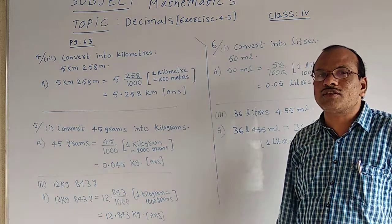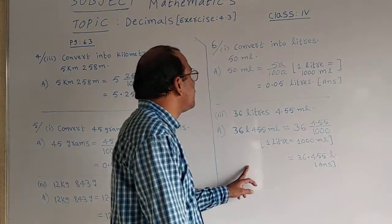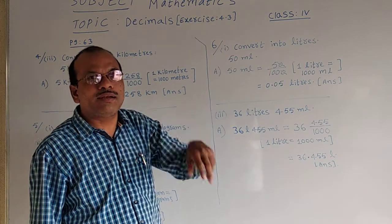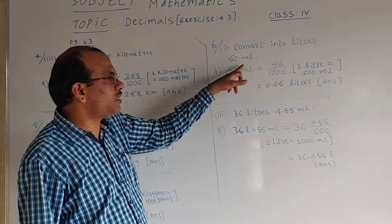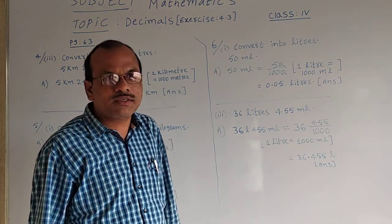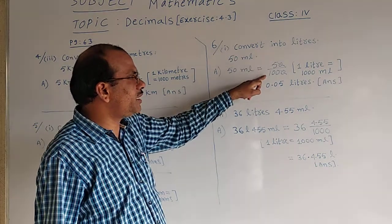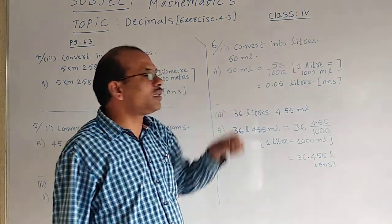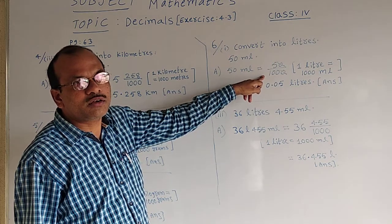Is it clear, students? One more question remains to complete this exercise and this chapter. That is the sixth question, first part: convert into liters. The given question is in milliliters — ML is nothing but milliliters — that should be converted into liters. We have seen milliliters and liters on packets of milk and coconut oil tins. Now, 50 milliliters: 50 should be divided by 1,000, because one liter is equal to 1,000 milliliters.